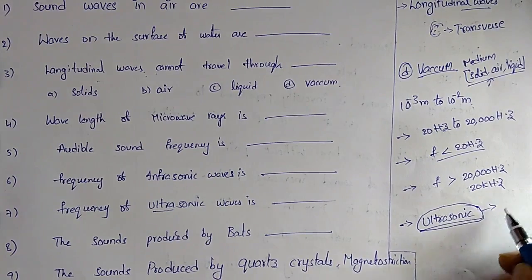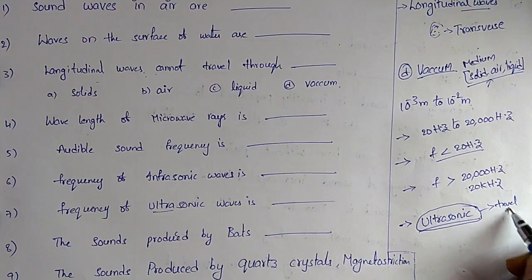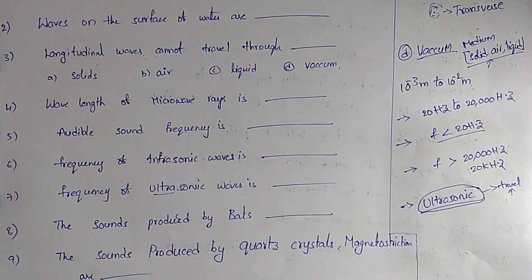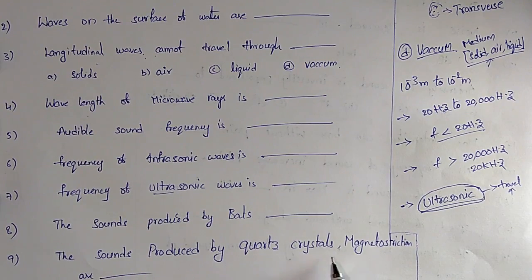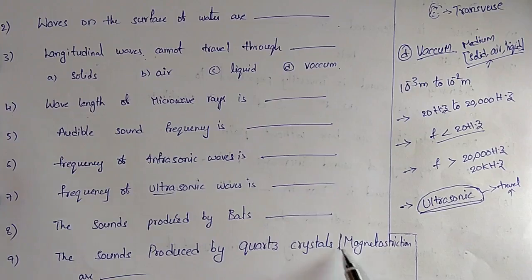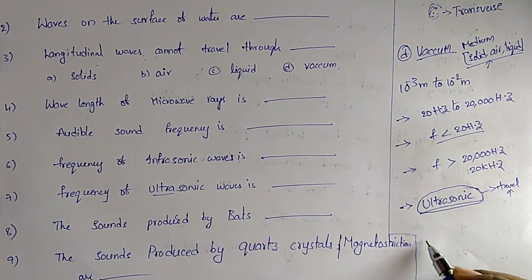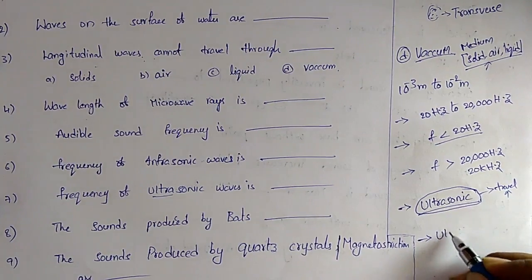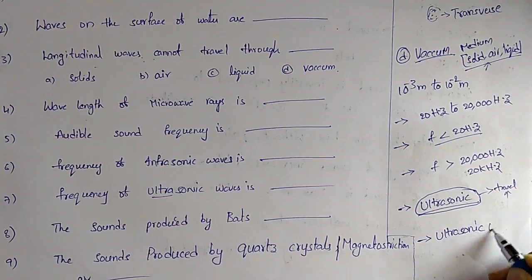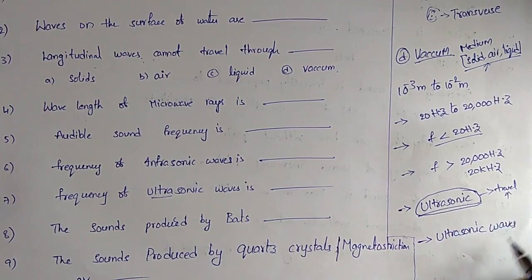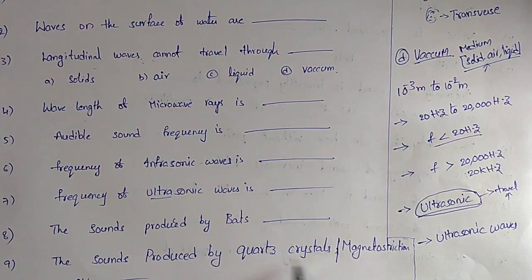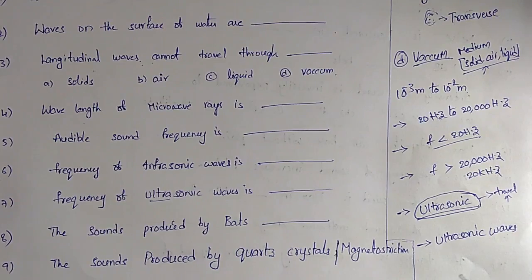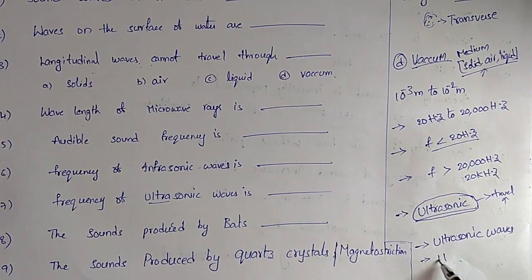Question 9: The sounds produced by quartz crystals and the magnetostriction process are ultrasonic waves. These ultrasonic waves can be generated by quartz crystals using the piezoelectric effect, or by magnetostriction, or by a Hartmann generator.